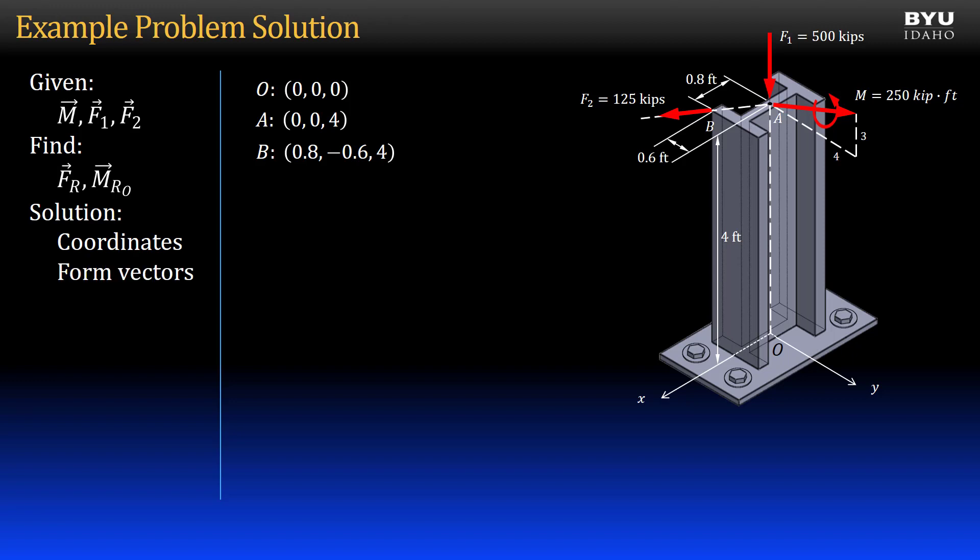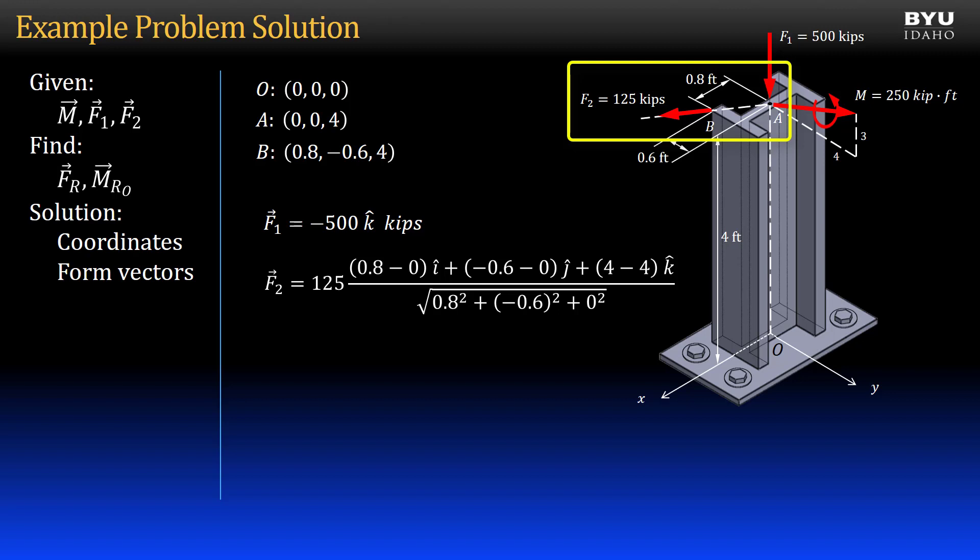Next, we will get our vectors in Cartesian notation. Force F1 is acting vertically downward with a magnitude of 500 kips. We write it as negative 500 K kips. We will get force F2 by multiplying its magnitude, 125 kips, by a unit vector formed as the position vector from A to B divided by its magnitude. We get 100i minus 75j kips.